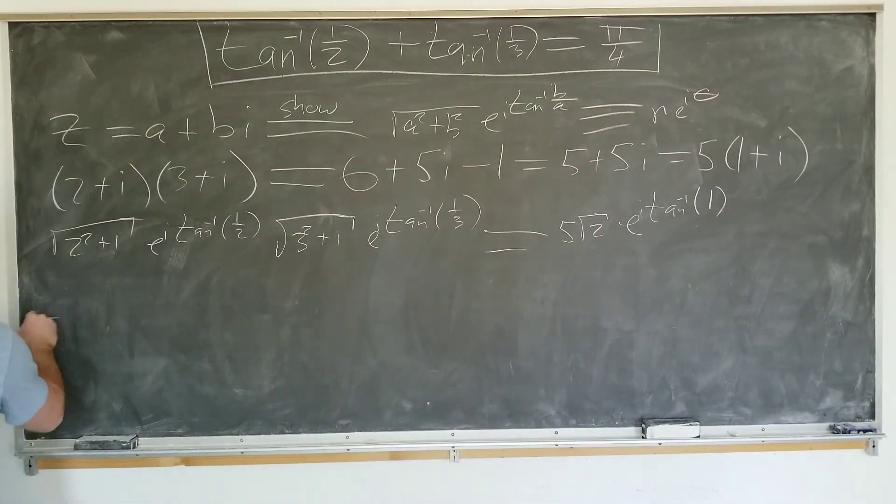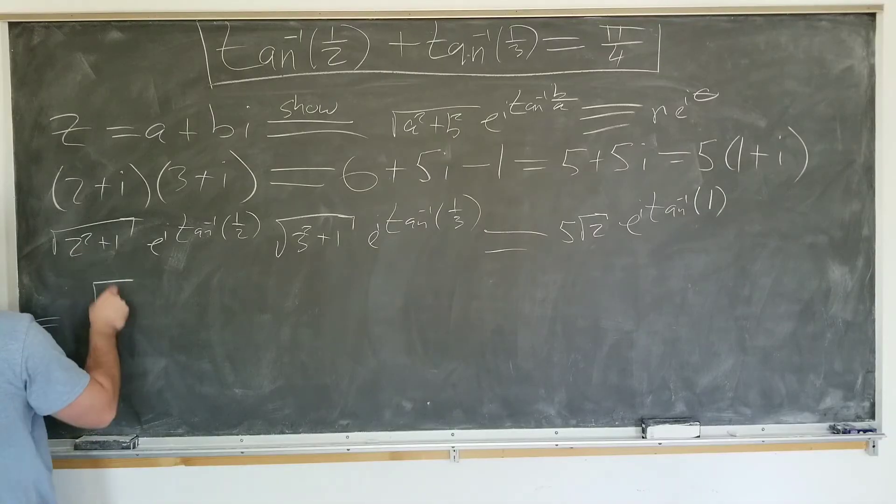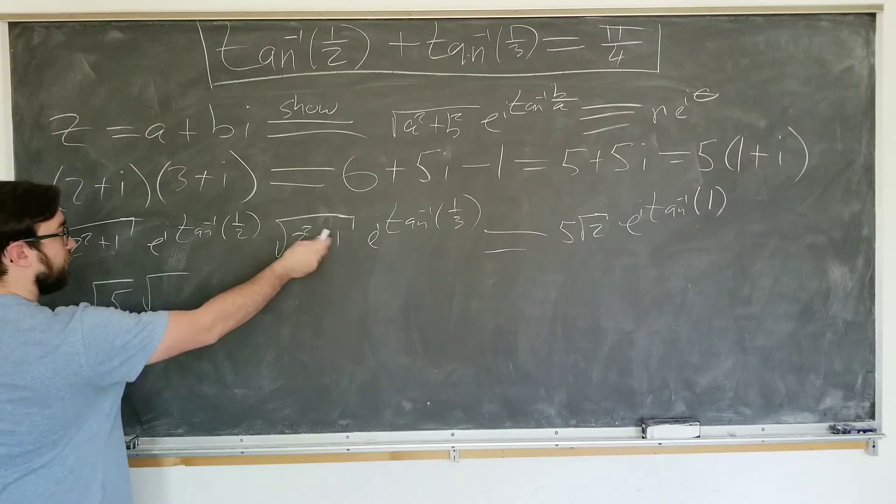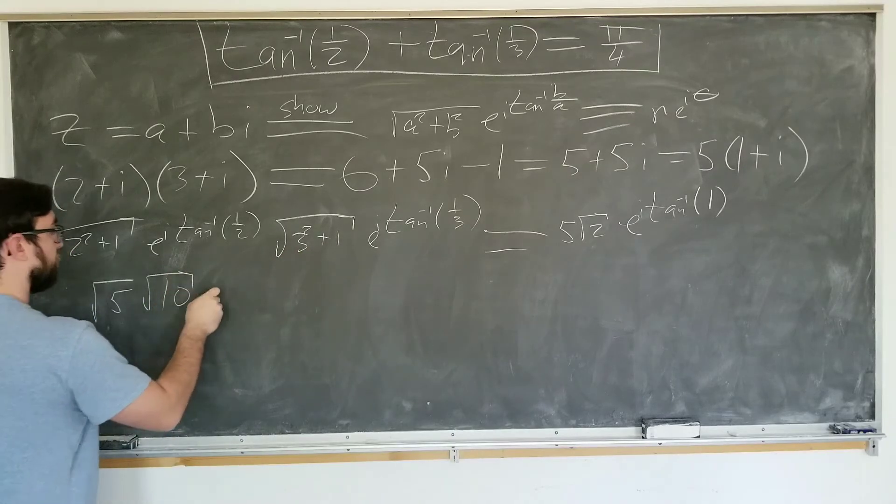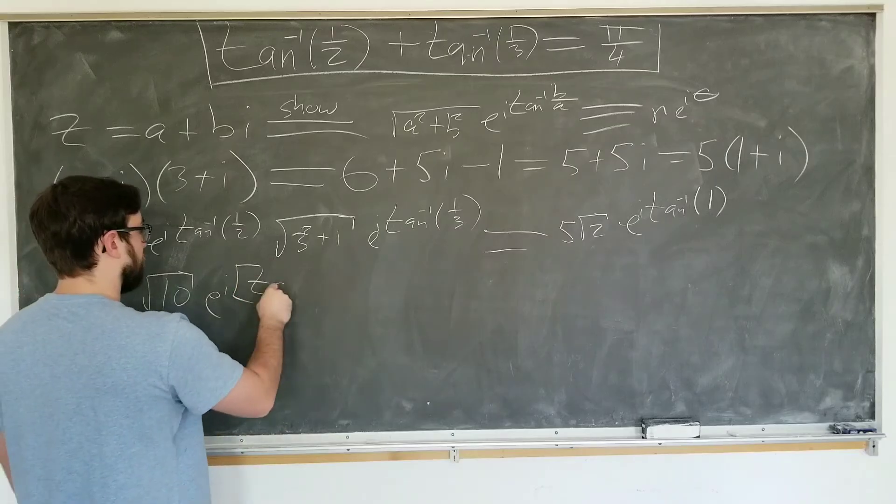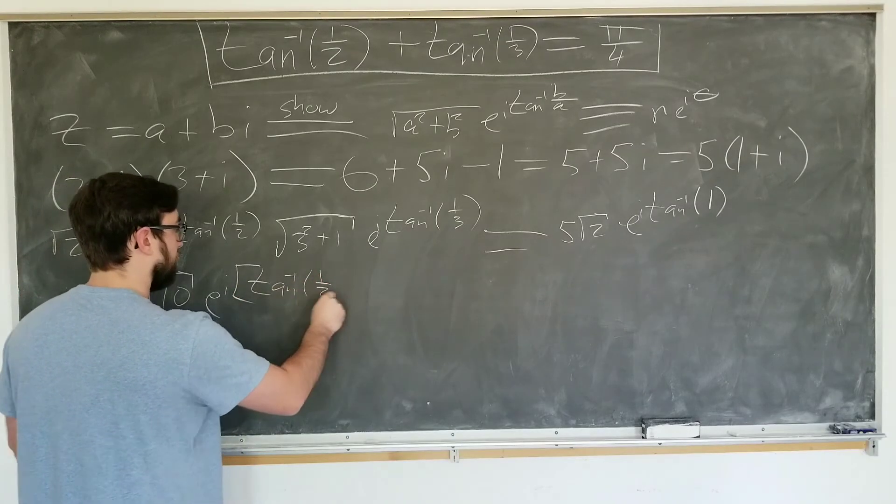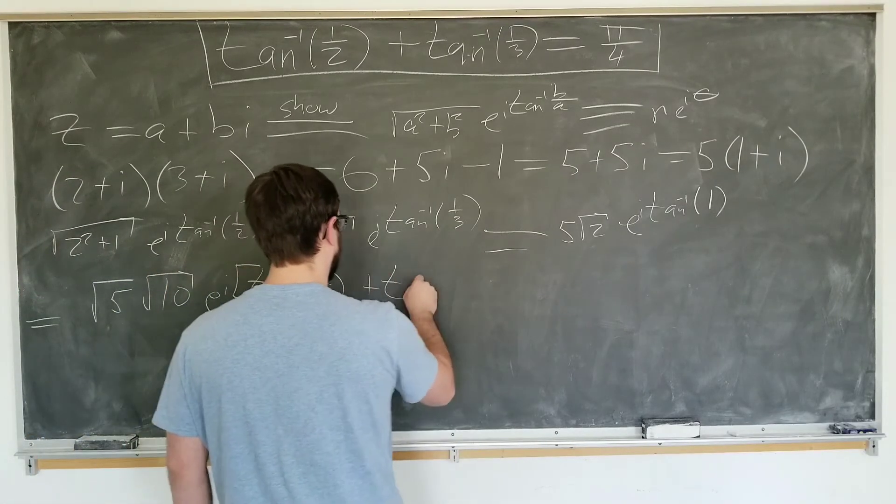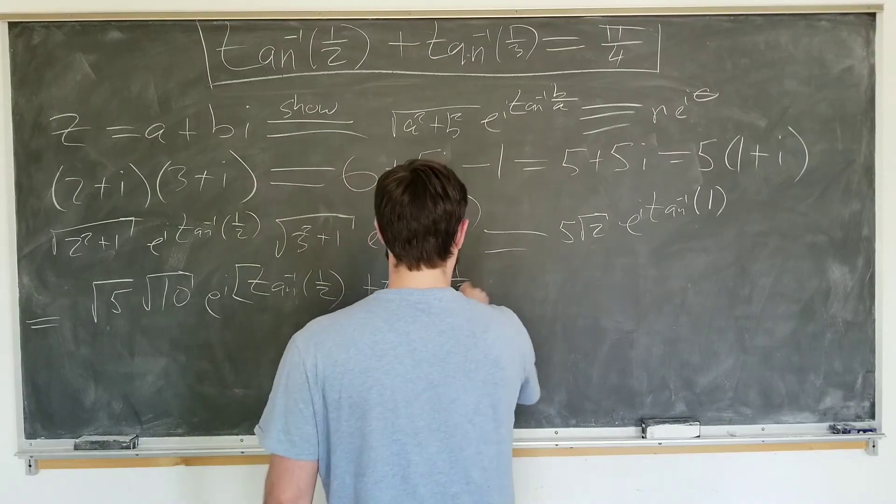Going to simplify this. It becomes square root of 5 times square root of 10, e to the i in brackets: inverse tangent of one-half plus inverse tangent of one-third, equals,